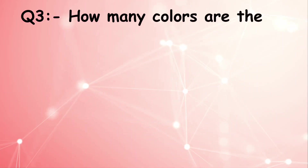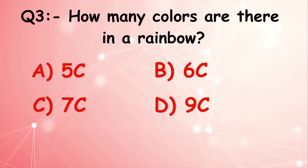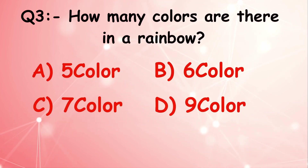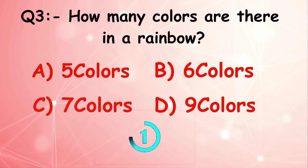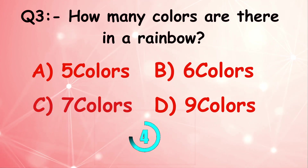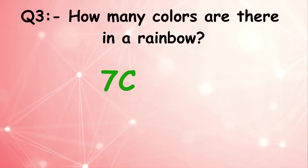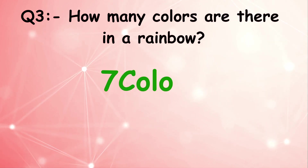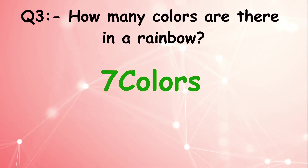How many colors are there in a rainbow? Answer is 7 colors.